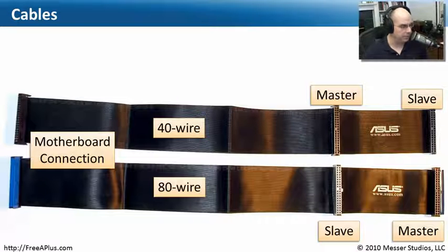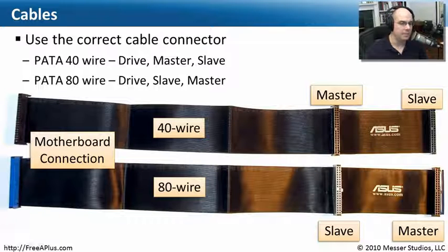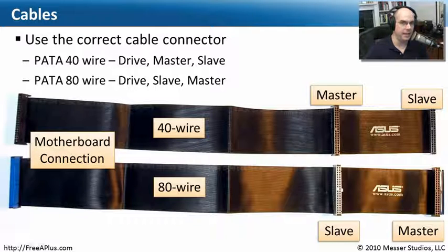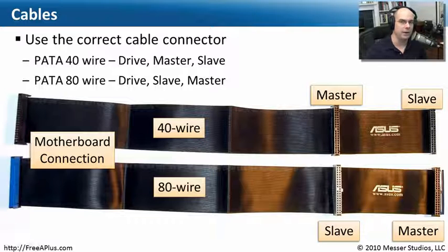If you're installing a new drive and it tells you that a boot device isn't available, maybe you've plugged the cables in the wrong way. As covered in a previous video, there are differences between a 40-wire and an 80-wire PATA cable. On a 40-wire cable, the master drive gets plugged in right in the middle of the cable. If it's an 80-wire cable with a higher-speed connection, the master is plugged into the end of the cable. If you've put in a brand new drive and you're still not seeing it, make sure you haven't plugged the wrong cable into the wrong place — trace it from your motherboard all the way to the end of the drive.